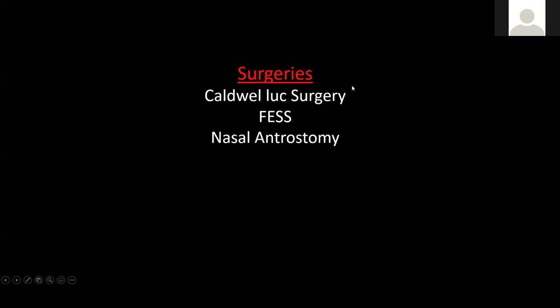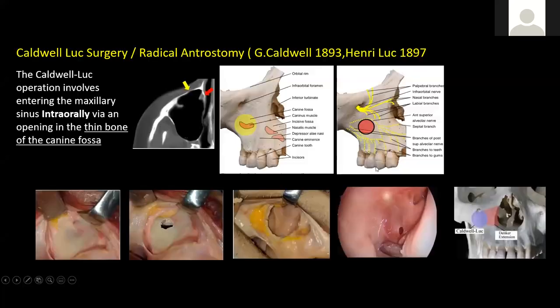Apart from tumors where we do maxillectomies, radical neck dissections, and similar procedures for malignancy, the most common surgeries we do are Caldwell-Luc surgery, Functional Endoscopic Sinus Surgery (FESS), and nasal antrostomy. The word antrostomy means making an opening in the sinus — either intraorally through the Caldwell-Luc or through the nose, which is known as a nasal antrostomy.